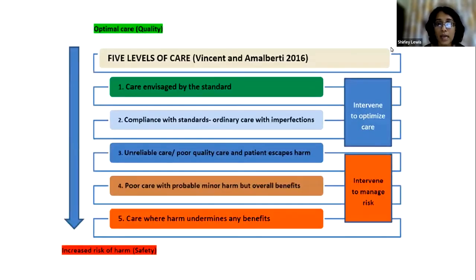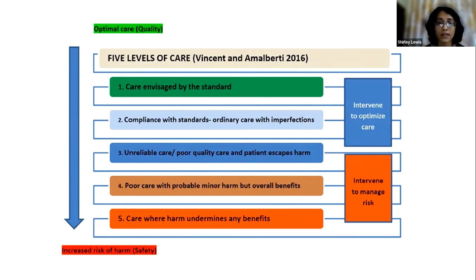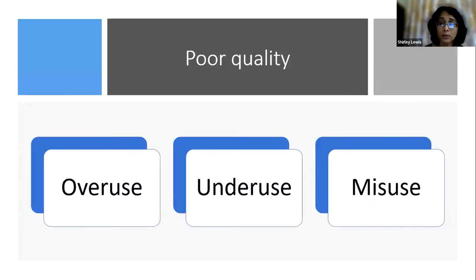STEEEP stands for Safety, Timeliness, being Effective, Equity, Efficient, and Patient-centered care. There are different levels of care, ranging from harm to the best level of care. Poor quality can result from overuse of certain processes, underuse where you do not know how to make a process efficient, or sometimes even misuse.